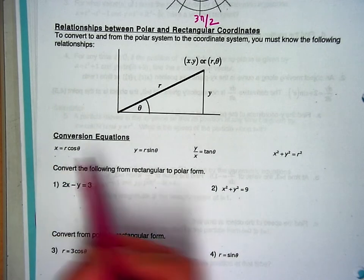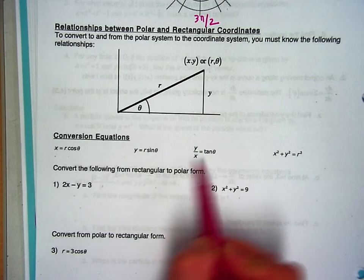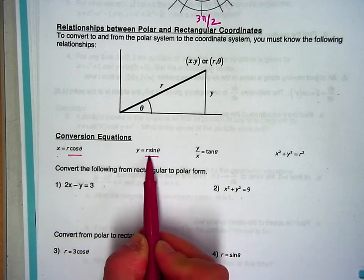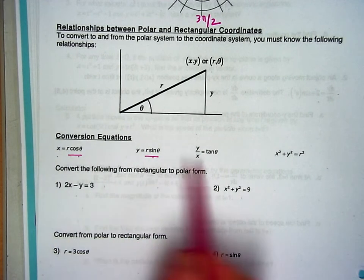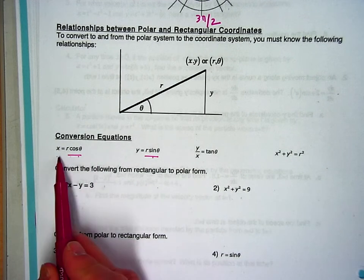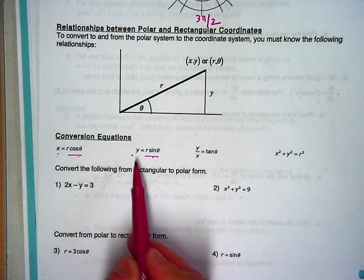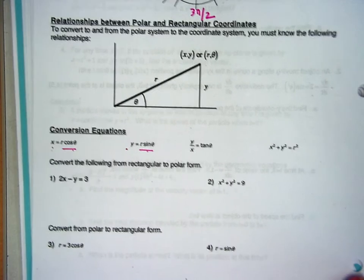So x equals r cosine theta, y equals r sine theta, y divided by x, and if you do that, if you divide these, y divided by x leaves you with tangent, and then x squared plus y squared equals r squared, because you have x squared plus y squared, so really sine squared plus cosine squared is going to be r, equals r squared.